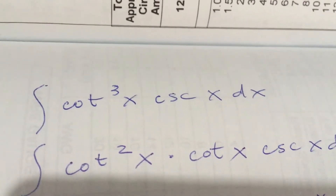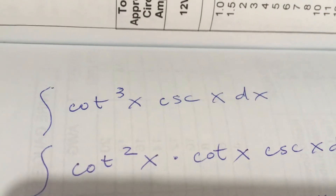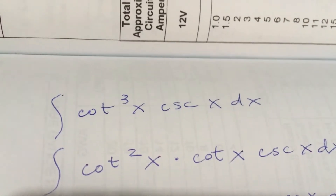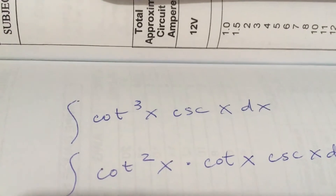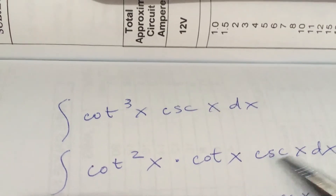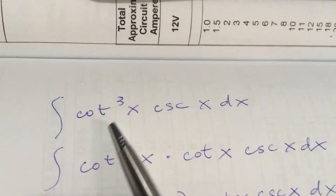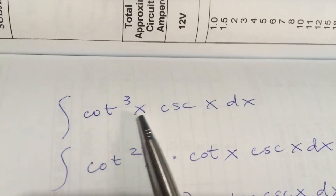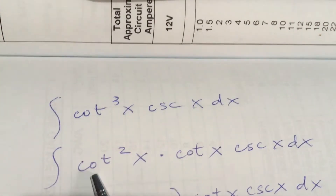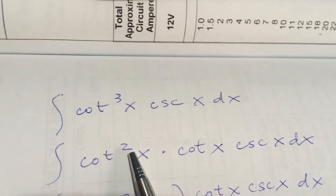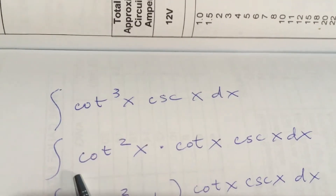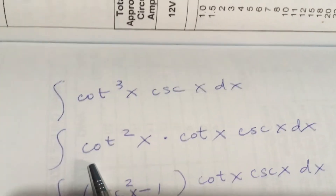In this video I'm going to show you how to integrate cotangent raised to the third power times cosecant x dx. The first strategy here is to expand cotangent raised to the third power into two cotangents: one raised to the second power and the other raised to the first power.